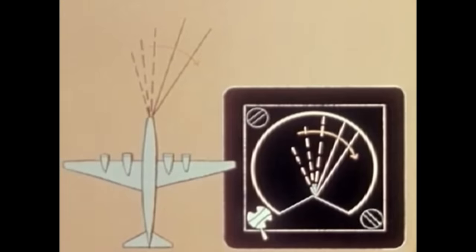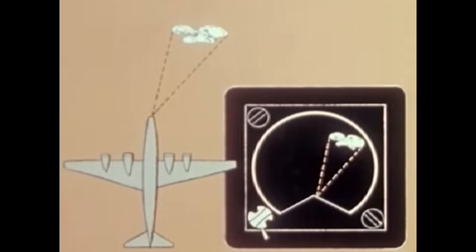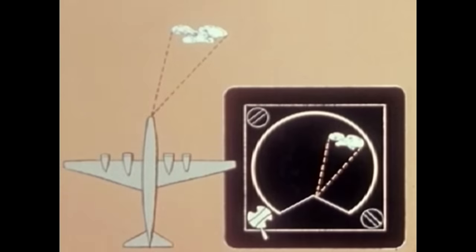The radar beam and the sweep are so matched that an object picked up by the beam appears in an exact relative position on the scope. The sweep line is continually revolving in time with the beam, and as it passes over the face of the scope it literally paints a picture for the pilot to study. The aircraft heading is always at the top of the screen.